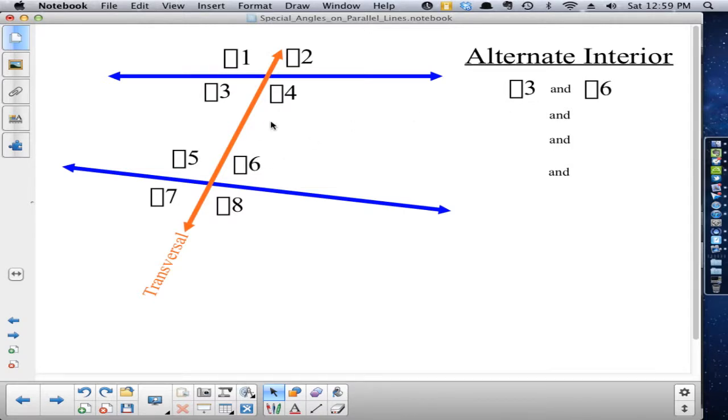Alternate interior angles would be four and five, and there are only two pairs of alternate interior angles. They have to be on opposite sides of the transversal and be at different intersections, not at the same. So three and six are alternate interior angles, four and five are alternate interior angles.